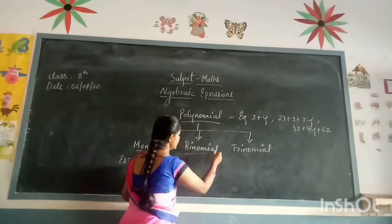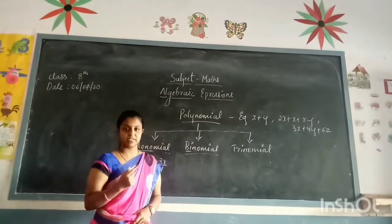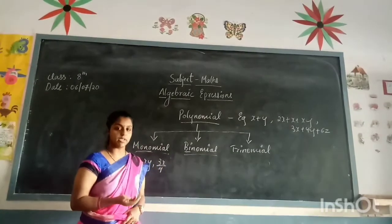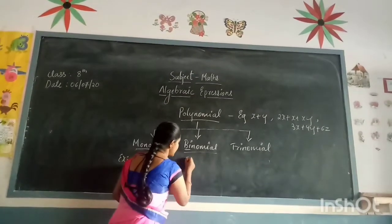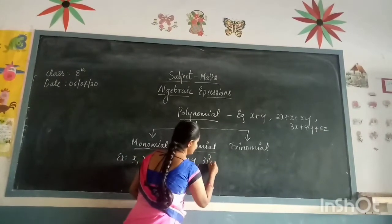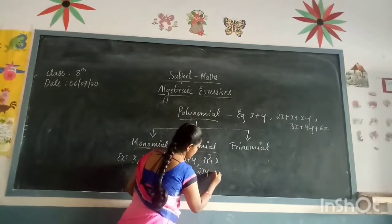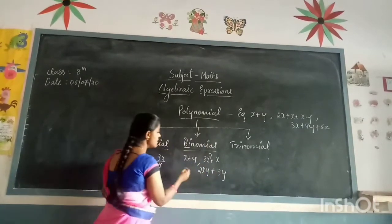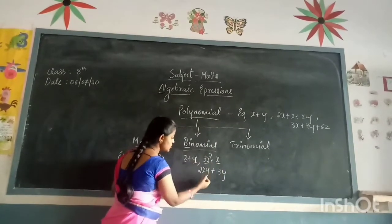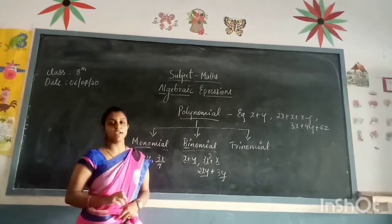Next comes binomial. The word 'bi' refers to 2. The polynomial which has two terms is called a binomial. For example, x plus y, 3xy plus x, 2xy plus 3y — you can see here each has two terms. That is why it is called a binomial.